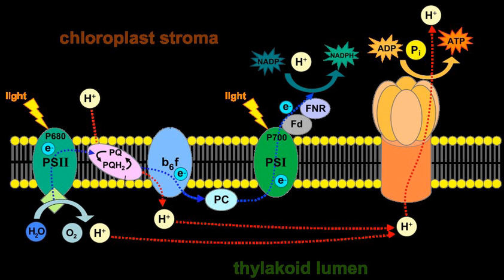This can happen in various ways. The extra energy can be converted into molecular motion and lost as heat. Some of the extra energy can be lost as heat, while the rest is lost as light — this re-emission of light energy is called fluorescence. The energy, but not the electron itself, can be passed on to another molecule; this is called resonance.